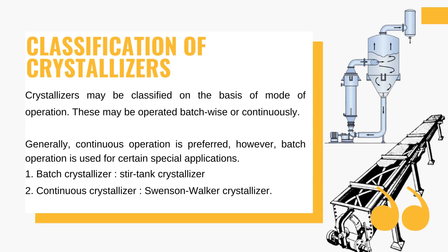Moving on to the classification of crystallizers: firstly, we will concentrate on the mode of operations. Based on that, crystallizers may be classified as batch operations or continuous operations. The widely used crystallizer is the continuous type, but for some specific and special cases batch crystallizers are used. An example of a batch crystallizer is a stirred tank crystallizer, which is an industrial equipment used for controlled crystallization. It consists of a stirred vessel with temperature control, promoting uniform crystal growth from liquid solution or melts, and is crucial in various industries to produce high-quality crystals for chemicals and pharmaceuticals.